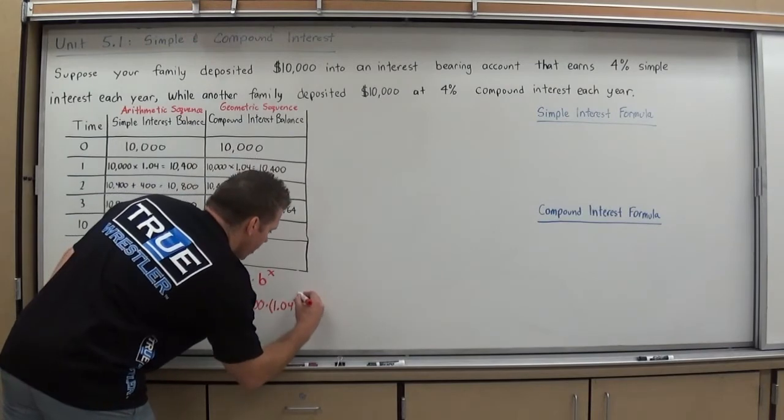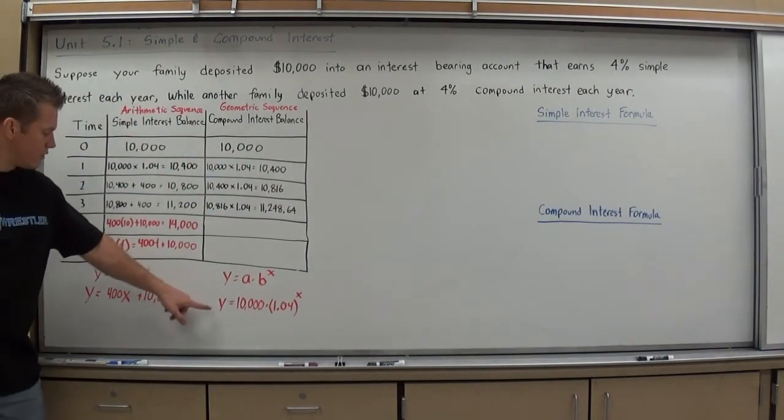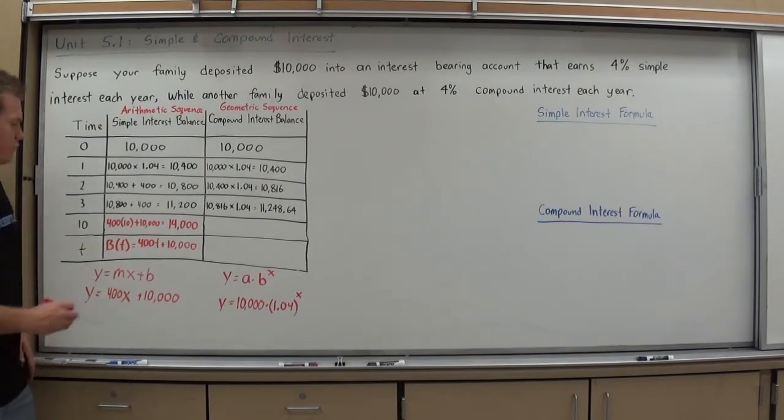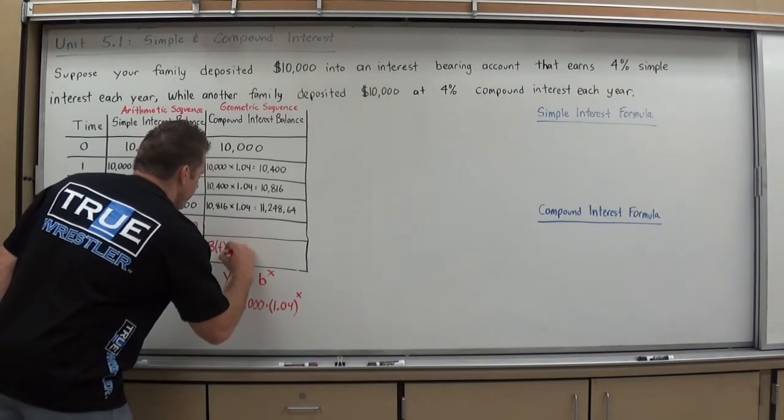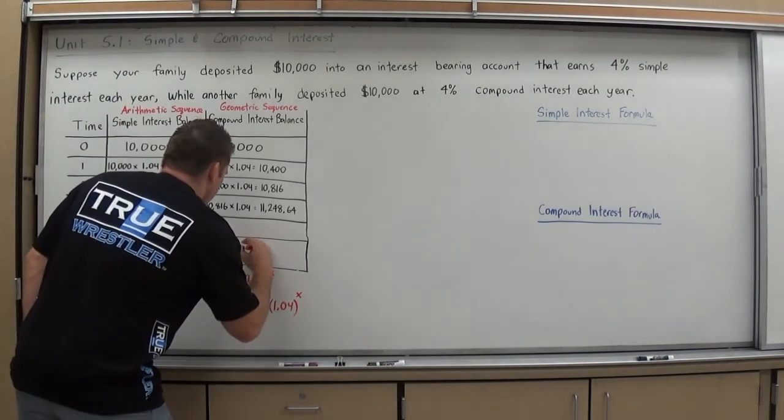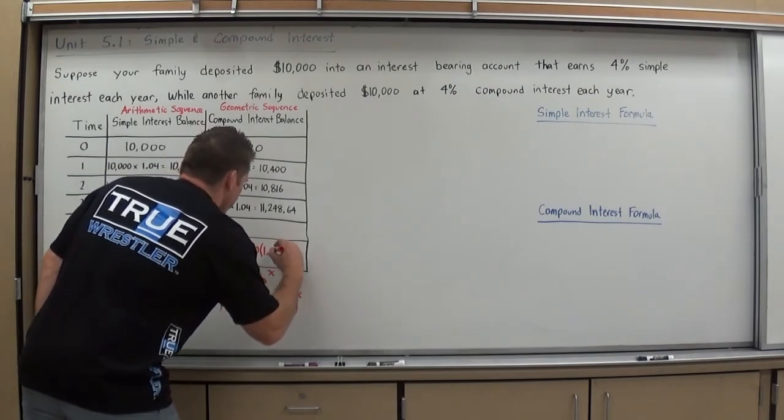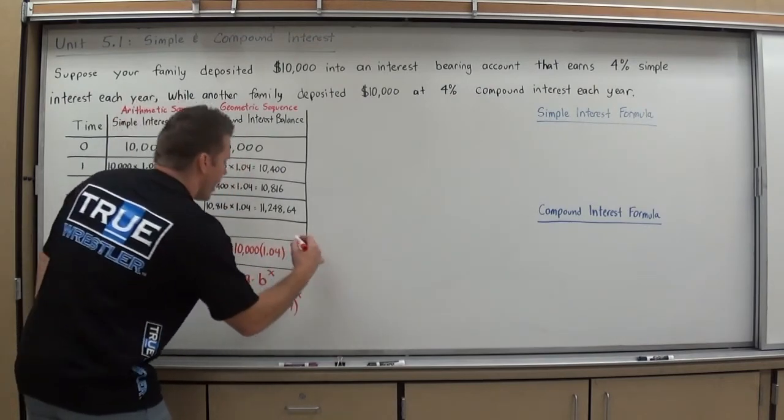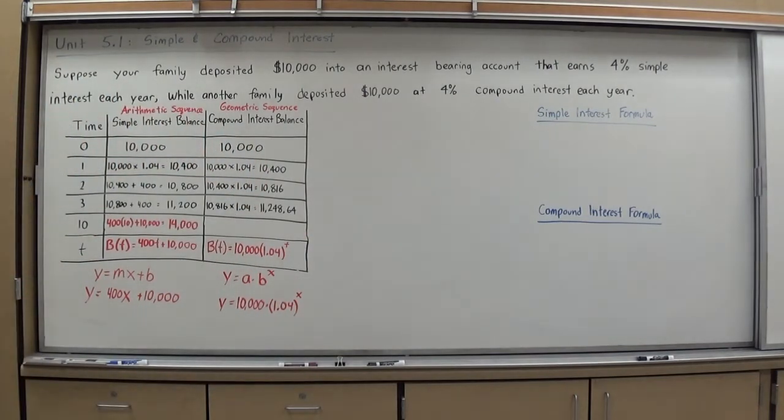I want to write it in a function notation with T. So similarly to what I did here, I'm going to change the Y to balance in terms of time, B(t), and then plug in my formula, 10,000 times 1.04. And instead of the X, it's in terms of time to the T power. And now I have a nice equation for compound interest.